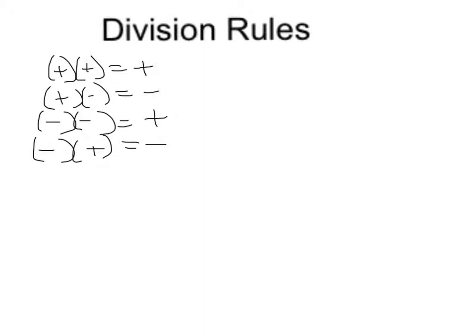We're going to discuss quickly the division rules. The multiplication rules are: when you multiply two positives, your answer is positive; whenever you're multiplying a positive times a negative, your answer will be negative; whenever you're multiplying two negatives, your answer is positive — it doesn't matter which number is bigger. Whenever you have two negatives, your answer is positive; two positives, your answer is positive; and whenever you have a positive and a negative, your answer is negative.